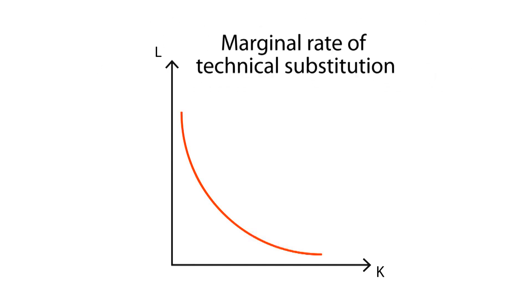This relation gives us the marginal rate of technical substitution between these inputs, which is the slope of the curve in each of its points.